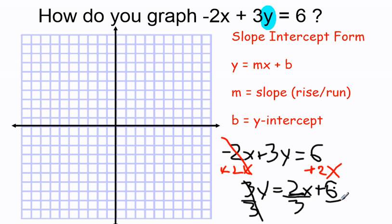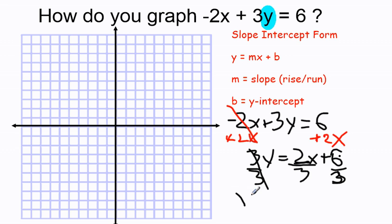And for 6, 3 goes into 6 twice. Six divided by 3 is 2. So my new equation is y equals 2 over 3 times x plus 6 over 3, which is 2.